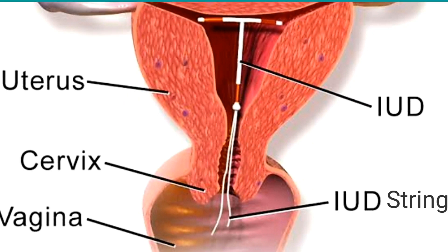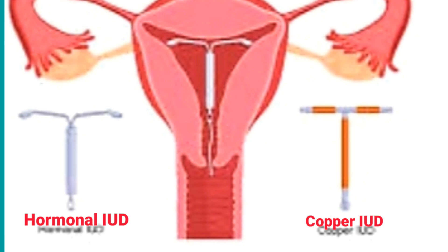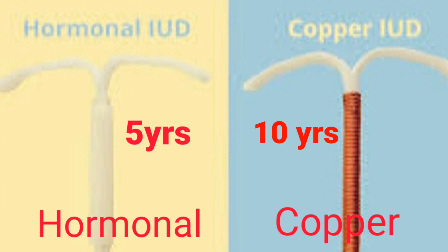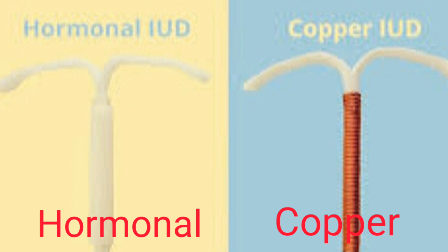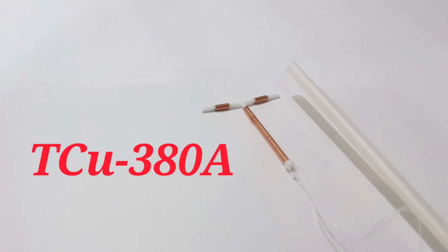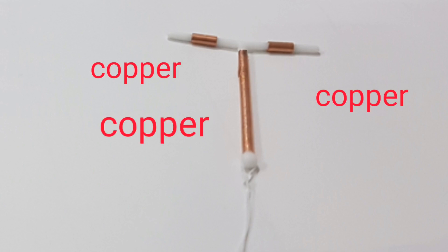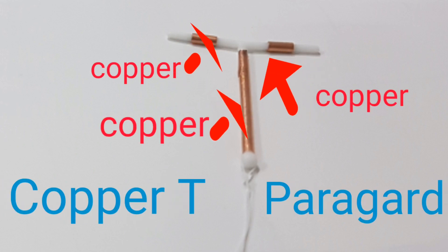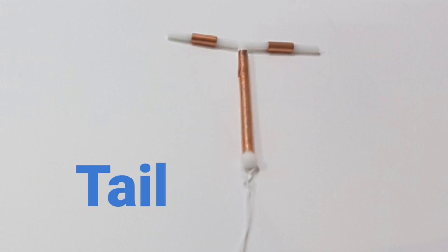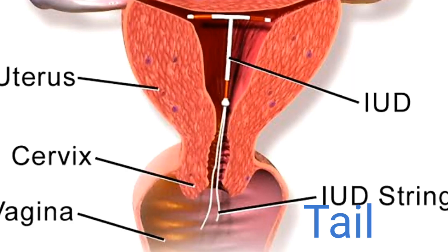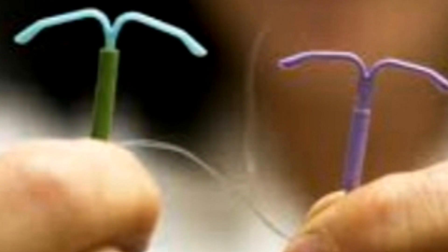Intrauterine devices are small contraceptive devices — plastic or metal — inserted through the cervix and positioned into the uterine cavity. There are two basic types: the hormonal IUD and the copper IUD. The copper IUD is currently the most commonly used. It is a C-shaped plastic device with a string of copper wrapped around its stem and copper bands on its arm. It has a two-stranded monofilament tail that protrudes through the cervical canal into the upper part of the vagina, allowing easy identification and removal.